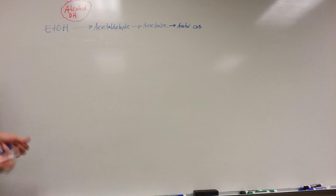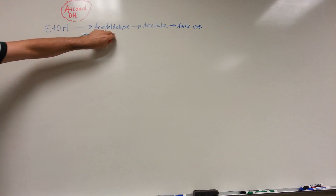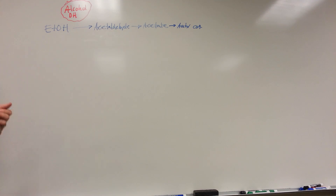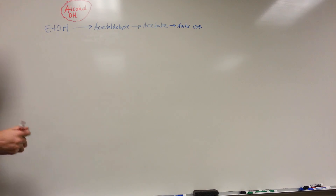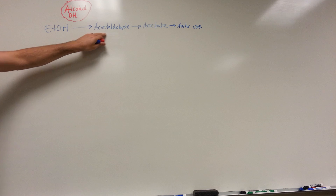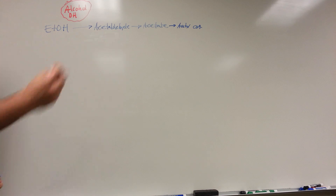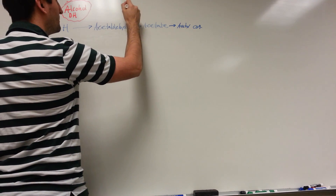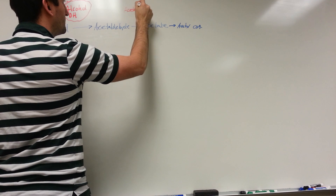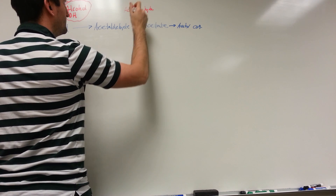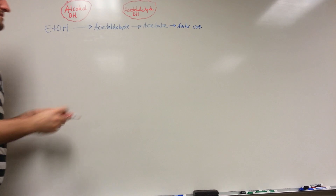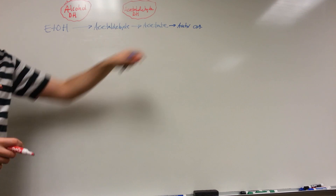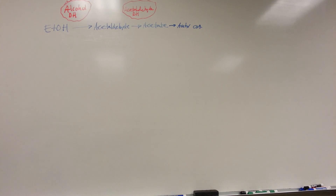Acetaldehyde is what's actually toxic to the body — this is what causes the bad symptoms of alcohol. Alcohol itself isn't as toxic as acetaldehyde, so the body really wants to get rid of this intermediate product. To do that, we use acetaldehyde dehydrogenase, which converts the acetaldehyde into acetate.